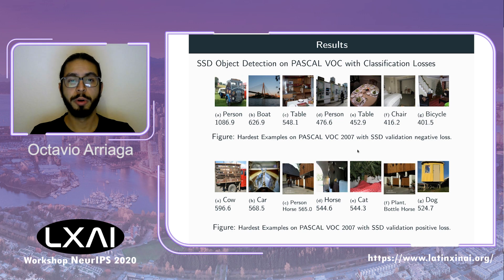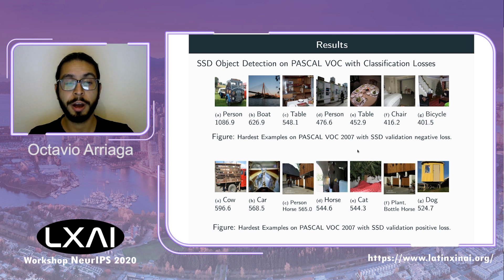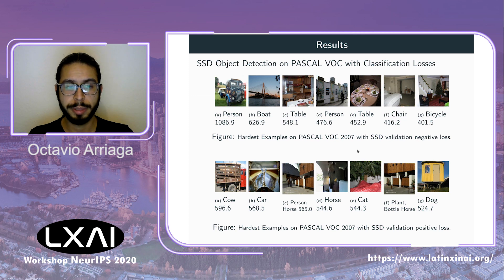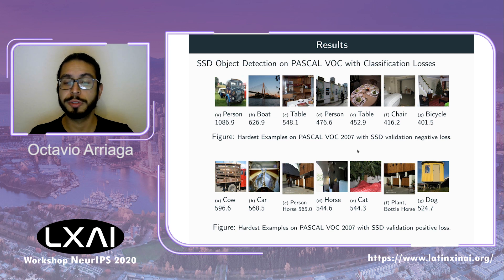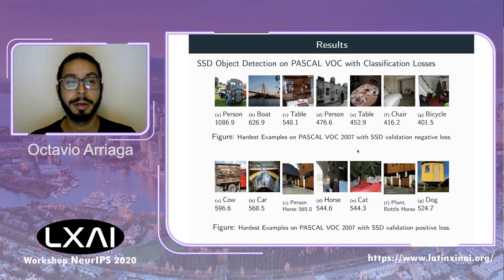The bottom row shows the positive classification loss results. The hardest positive losses correspond to objects in very strange poses or heavily occluded by fences or cars. The top row shows negative losses — background bounding boxes incorrectly classified as containing something, mostly because the scenes appear very cluttered.